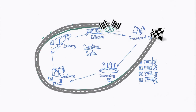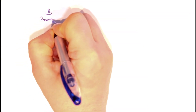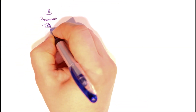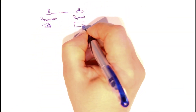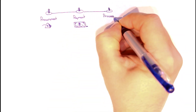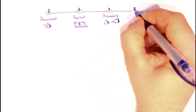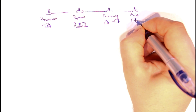Here we go deeper in description of cash conversion cycle and explanation of how its length differs from the length of the operating cycle. The operating cycle encompasses the following stages: Procurement, Payment, Processing, Sale, and Collection.